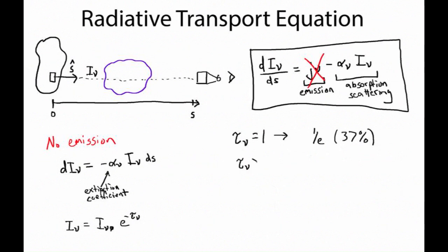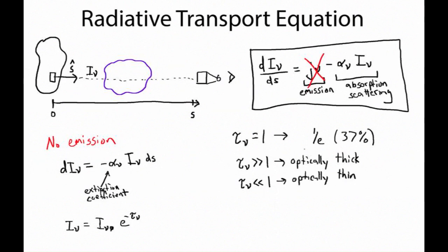When tau-sub-nu is much greater than 1, we call this medium optically thick — it's very hard to see through the cloud, and we're losing information from the other side. If something's optically thick, it basically means you can't see through it. On the flip side, if the optical depth is much less than 1, this is optically thin, meaning the medium is quite transparent and easy to see through. Optical depth is a very powerful concept for understanding the radiative transport equation, particularly when considering only absorption or scattering.